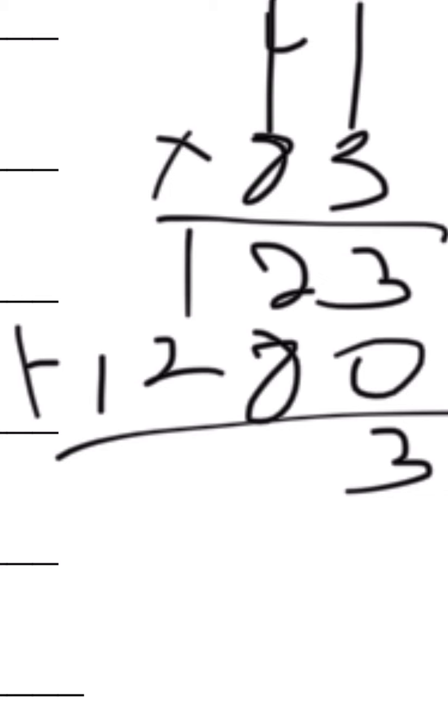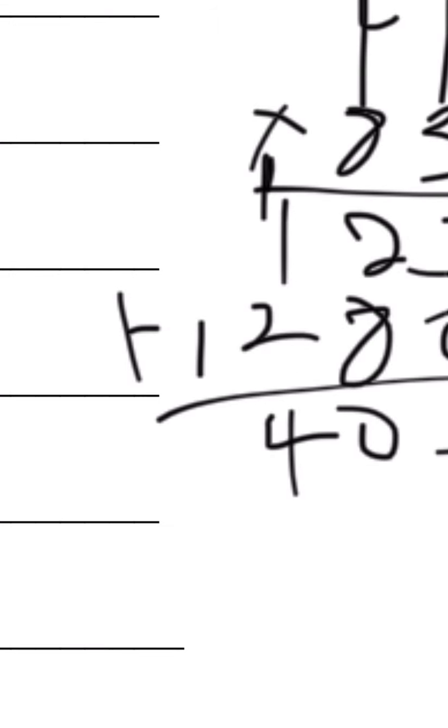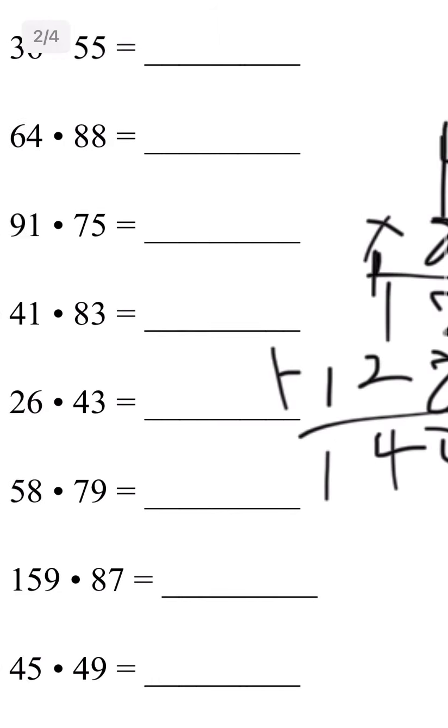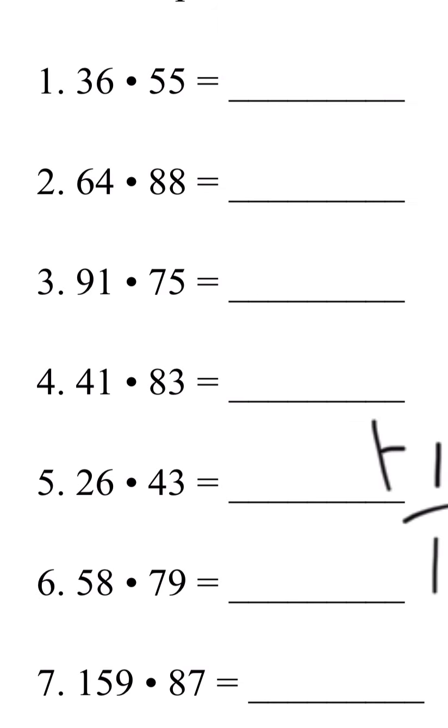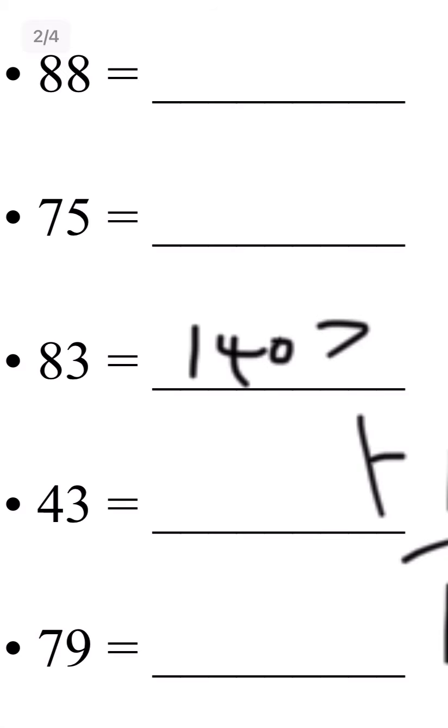We got 3 plus 0 is 3. 2 plus 8 is 10, write 1 on top. 1 plus 1 plus 2 is 4. And 0 plus 1 is 1. Number 4 answer is 1,403.